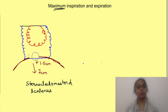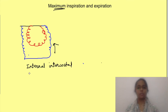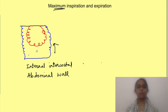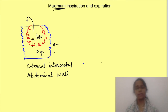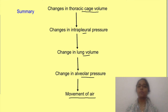For exhaling air above the tidal volume, the thoracic cage volume decreases from the resting state, brought about by contraction of the internal intercostal muscles and abdominal wall muscles — the external and internal obliques, rectus abdominis, and transversus abdominis. With the decrease in thoracic cage volume, pleural pressure increases and even becomes positive in forced expiration, decreasing lung volume and increasing alveolar pressure, causing air to be exhaled. In summary, pressure differences are created by changing the dimensions of the thoracic cage, changing pleural pressure, which affects lung volume and in turn alveolar pressure, generating pressure gradients that cause movement of air.